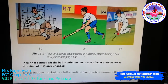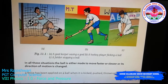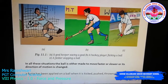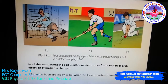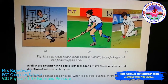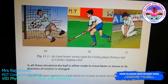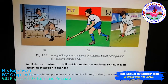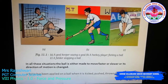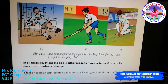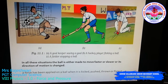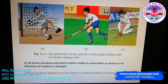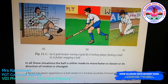In all these situations, the ball is either made to move faster, slower, or its direction of motion is changed. For example, when a hockey player flicks the ball with a hockey stick, the ball's direction changes from one place to another. Similarly, the fielder stops the ball by applying force and pressure over it, even though the batsman hit it with full force. Force is applied on a ball when it is kicked, pushed, thrown, or flicked.